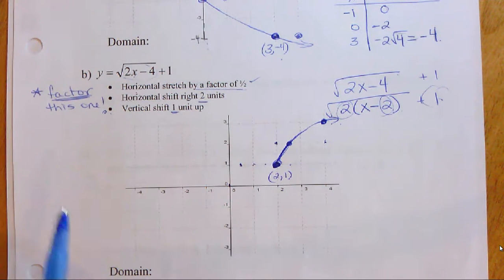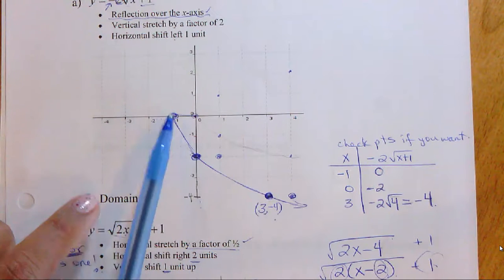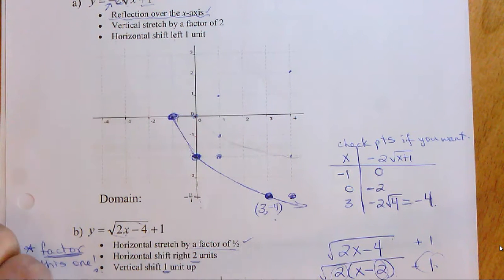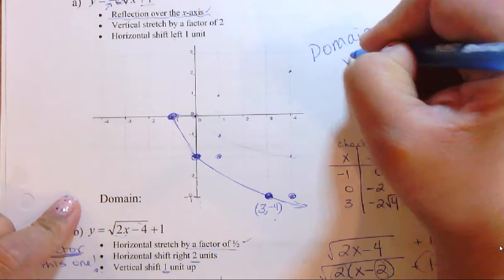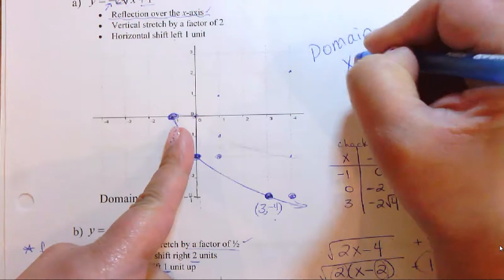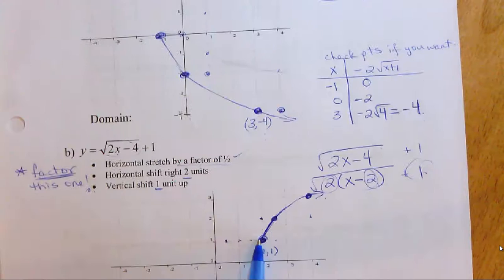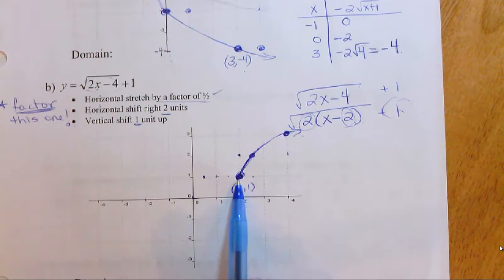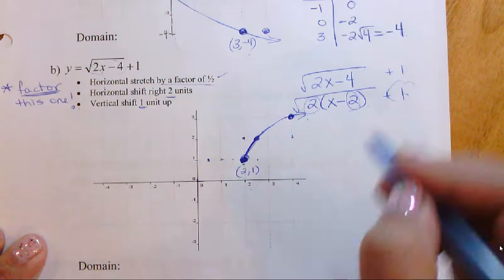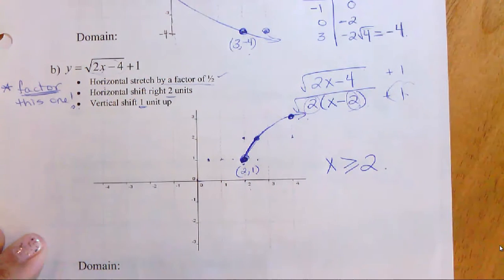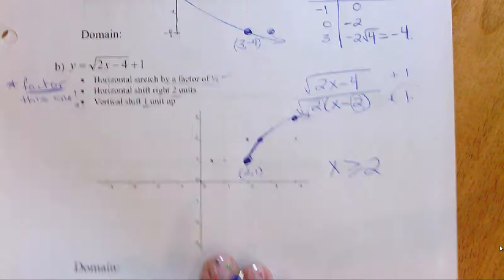Let's go back and look at the domain for the previous examples. What x values are allowed as inputs? For the first transformed graph, the smallest x value is negative 1, so the domain is x greater than or equal to negative 1. For example B, the smallest x value on the graph is 2, so x is greater than or equal to 2.